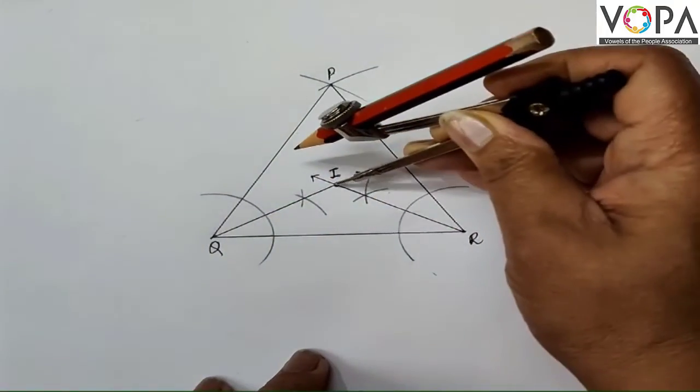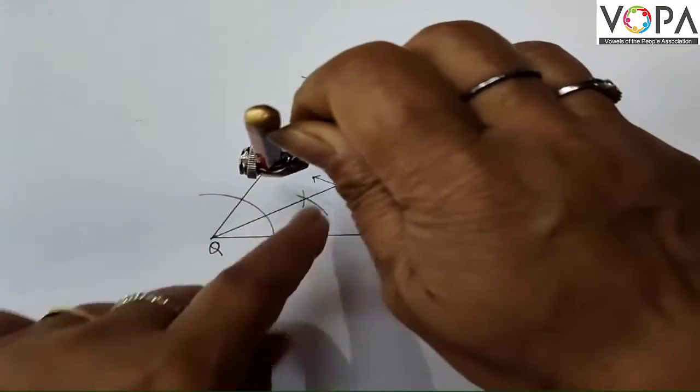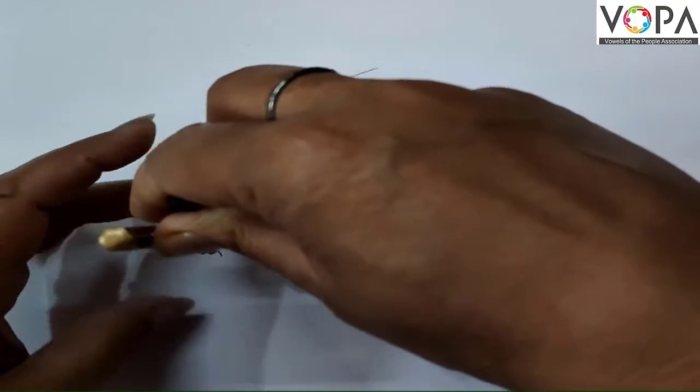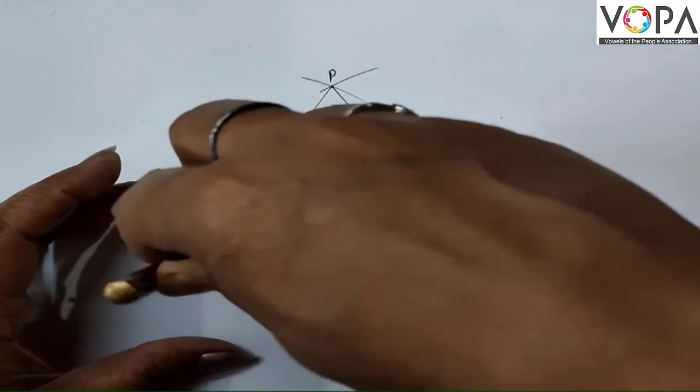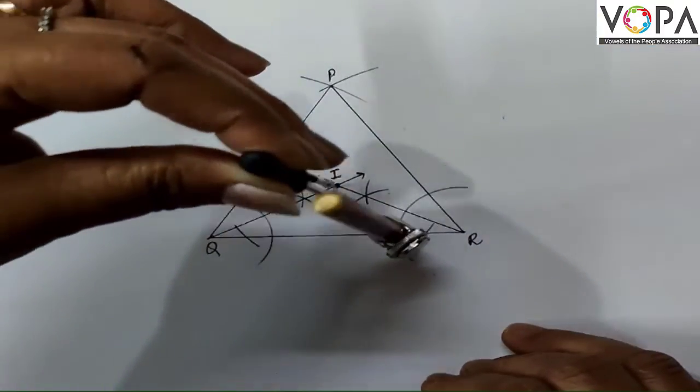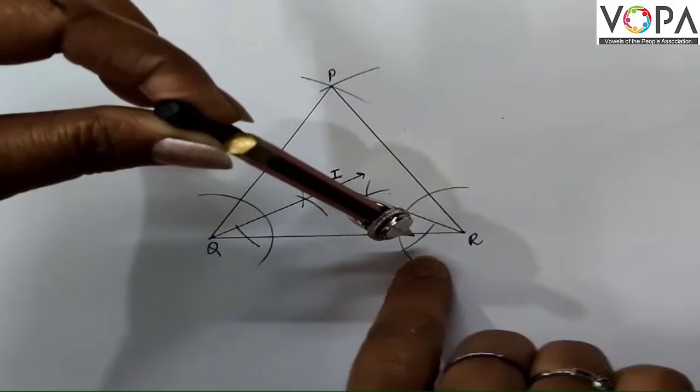Now we need to draw a perpendicular from here. A perpendicular should be drawn to get the radius. What I'm doing now is drawing a perpendicular from a point to a line segment. Draw like this. Two arcs are drawn on the side QR.